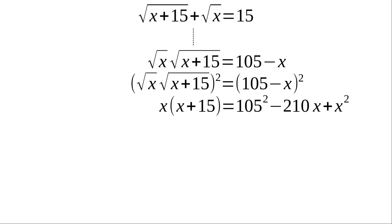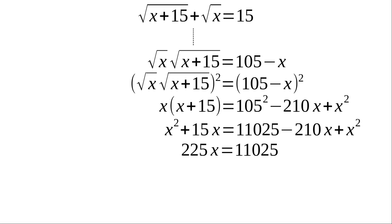And then you see that our x is on one side, have no square root anymore. And if you look at it, we have x squared plus 15x on one side. And 11,025 minus 210 times x plus x squared. Now, this looks like a quadratic form or equation. But when you take a look, the x squareds subtract out. That gives us 225x equals 11,025 when we collect the x's on one side and the constant on the other. And then when you divide 11,025 by 225, you get 49.